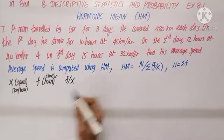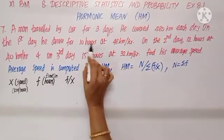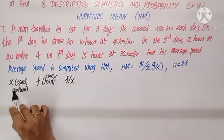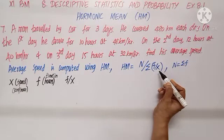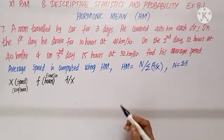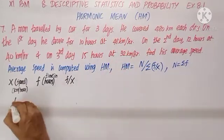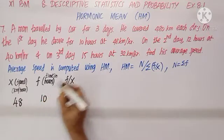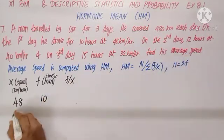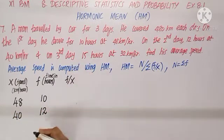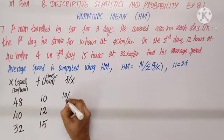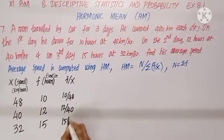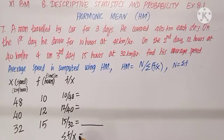Average speed is computed using harmonic mean. We take the speed per hour as x and number of hours traveled as f. The formula is HM = N divided by sigma(f/x), where N is the total frequency. We tabulate: first day — x=48, f=10; second day — x=40, f=12; third day — x=32, f=15. We compute f/x for each: 10/48, 12/40, 15/32.